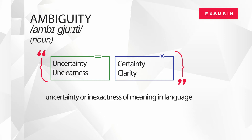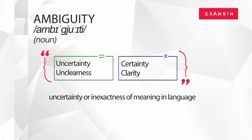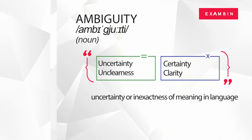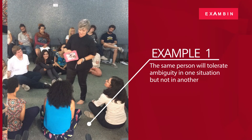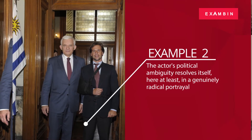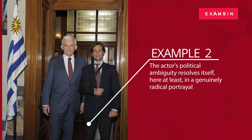We will see a few examples to understand the word ambiguity better. The same person will tolerate ambiguity in one situation but not in another. The actor's political ambiguity resolves itself, here at least, in a genuinely radical portrayal.